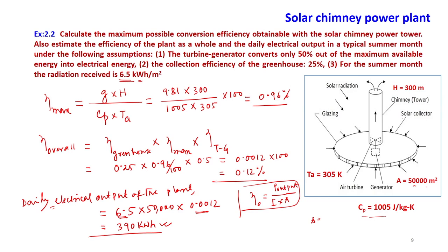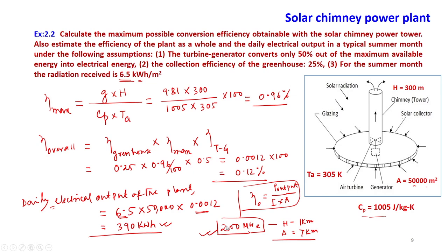One more example: a solar chimney power plant exists in Australia with a capacity of about 200 MW electrical, a chimney height of about 1 kilometer, and a collector area of about 7 kilometers in radius. People have already demonstrated its working and are building such plants as per the requirement of a particular location. However, its efficiency is really very, very low, but when there is real demand, we need to go for these kinds of technologies.